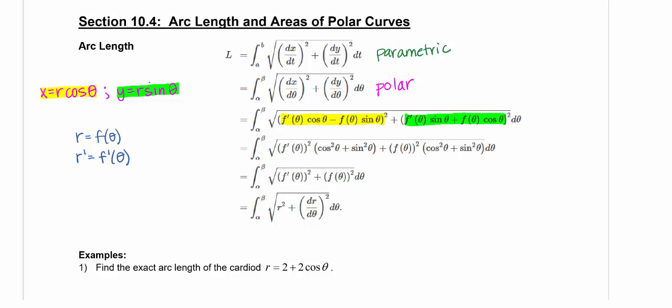So you're going to see that you can factor out an f prime of theta quantity squared. When you do from those two terms, you'll have a cosine squared plus sine squared. And you can also factor out from two different terms, f of theta squared. And so you'll have cosine squared plus sine squared in those. And of course those are just one.